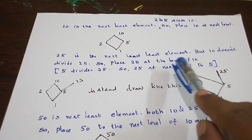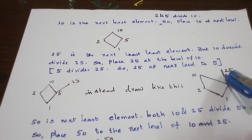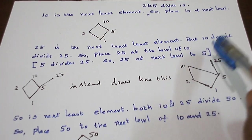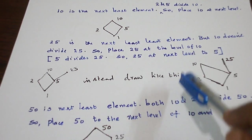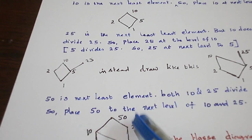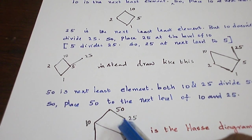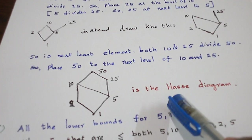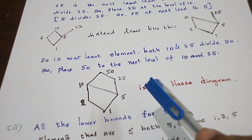The next least element is 50. The previous level elements 25 and 10 both divide 50. So place the element 50 at the next level above 10 and 25. 10 divides 50 is represented, and 25 divides 50 is represented. This is the final Hasse diagram for the given set under the given relation.